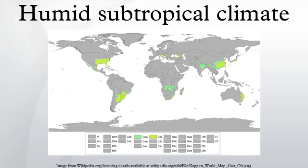Humid subtropical climates normally lie on the southeast side of all continents, generally between latitudes 25° and 40° north, and tend to be located at coastal or near-coastal locations. However, in some cases the climate extends well inland, most notably in China and the United States.